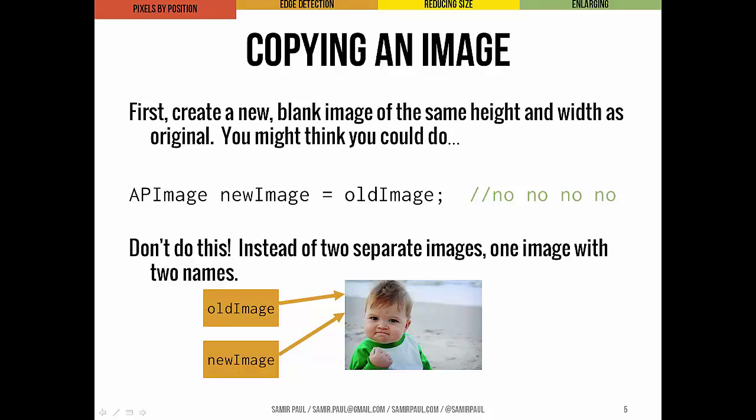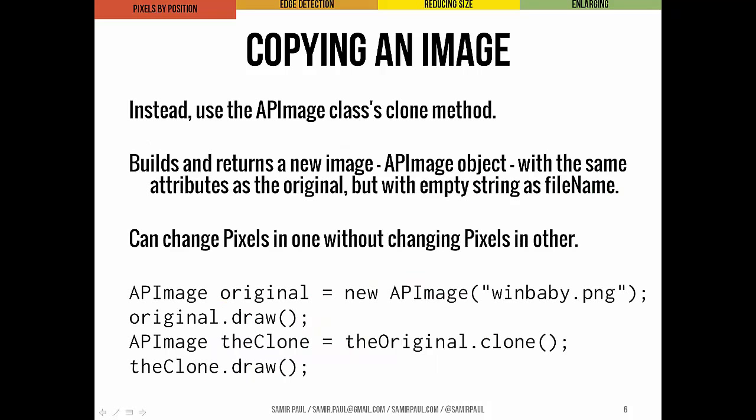Let's consider an algorithm that builds a new image from an old one. You could create a new blank image of the same height and width as the original, but it's often easier to start with a copy of the original. The most obvious way you might do this is: APImage newImage equals oldImage. However, this is a mistake.